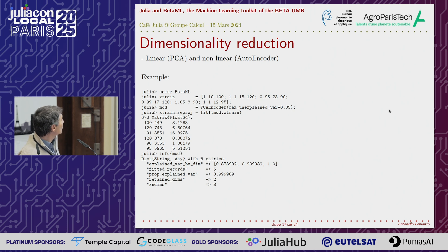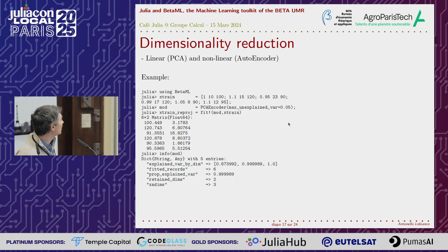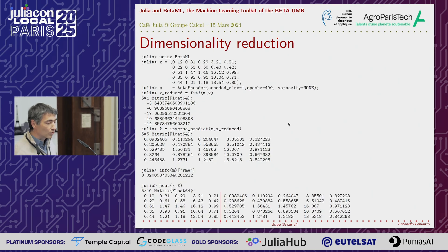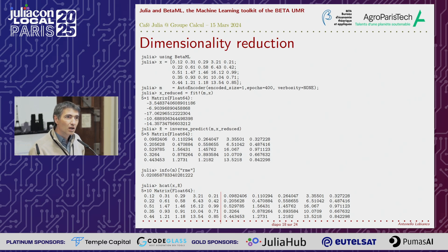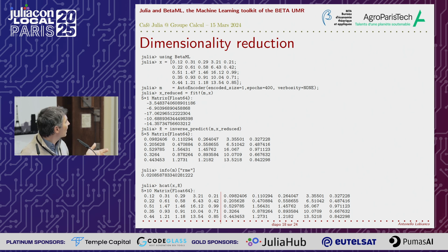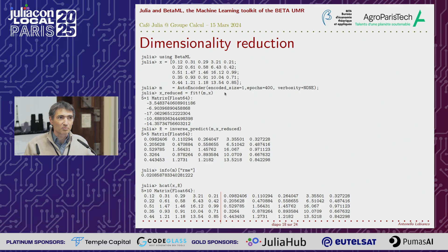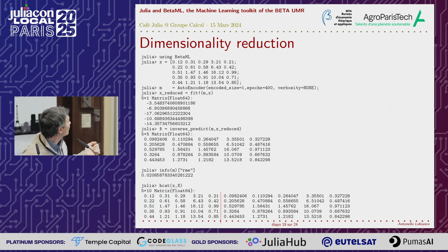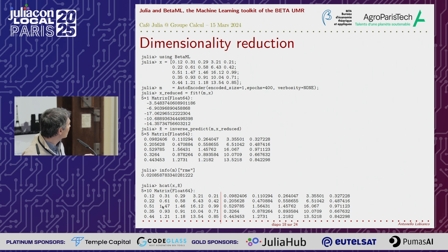We have dimensionality reduction. We have a PCA encoder where you can specify the unexplained variance you are willing to tolerate, or you can use an autoencoder. For my knowledge, there aren't other libraries that make it so easy to run an autoencoder — you don't need to specify your encoding or decoding layers. You just give the encoded size, which is the output of your hidden space, and that's all you need to run an autoencoder. In this example, we reduce the matrix to one dimension and then inverse predict to get it back, and the reconstruction is pretty close to the original matrix.